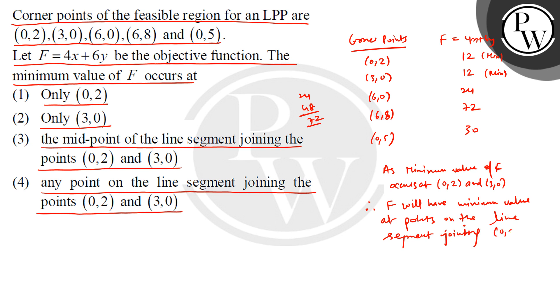Joining (0,2) and (3,0), so which option is correct? I hope you understood it well. Best of luck!